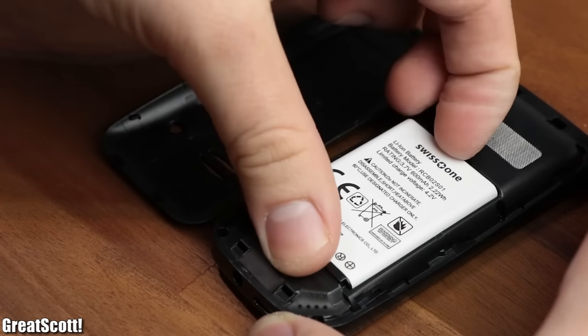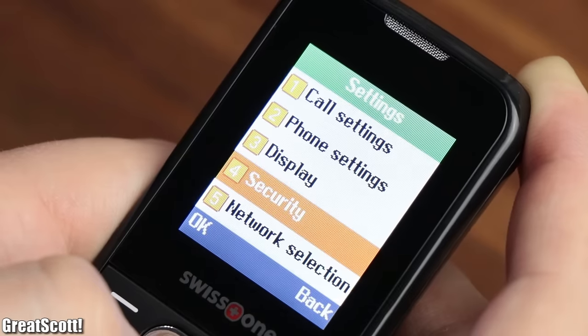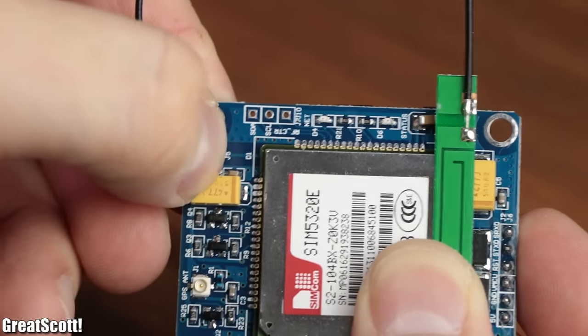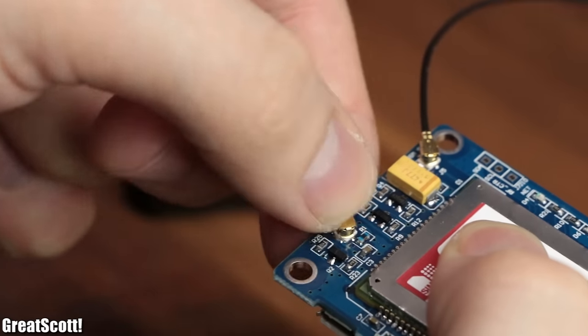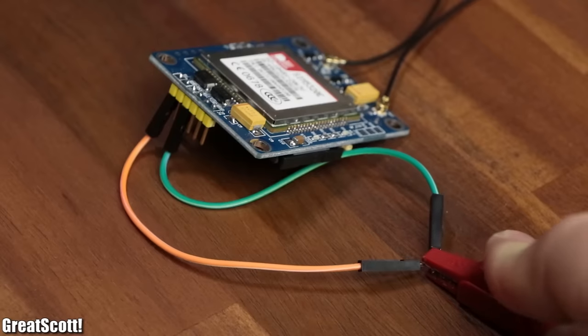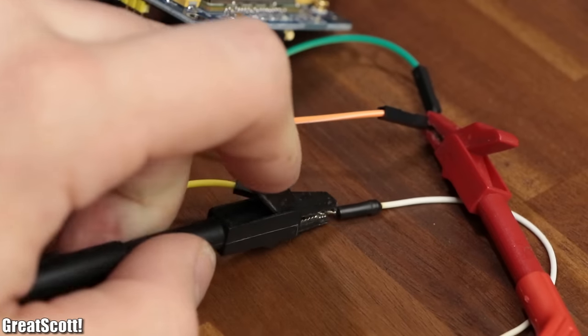And to make our life easier, it is also a good idea to insert the SIM card into an old phone beforehand in order to remove the SIM lock. Then we can simply hook up the included GSM and GPS antenna and connect the 5V and VMCU pin to the positive terminal of a 5V power source and the GND pin to the negative terminal.